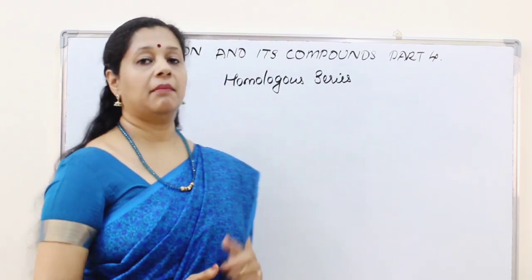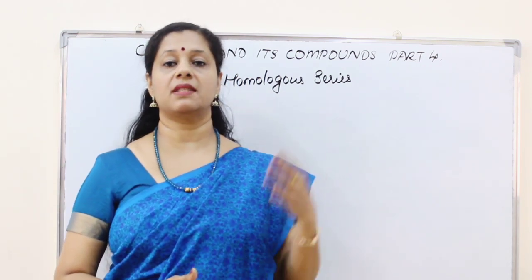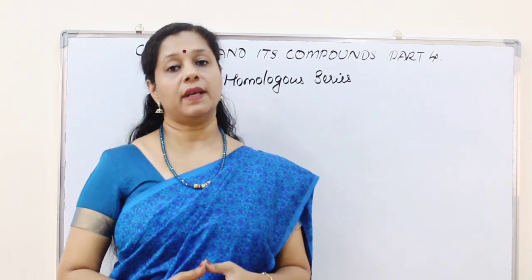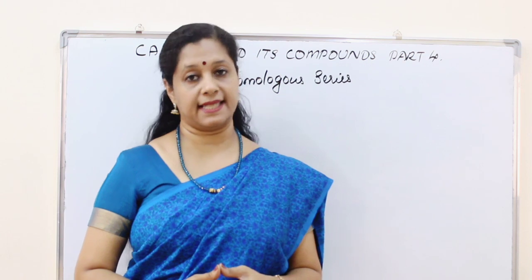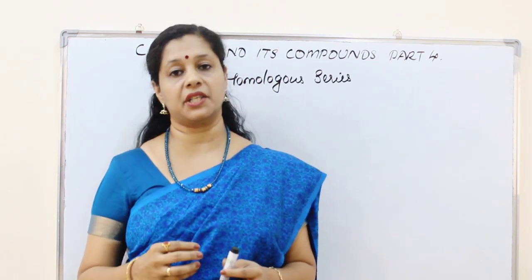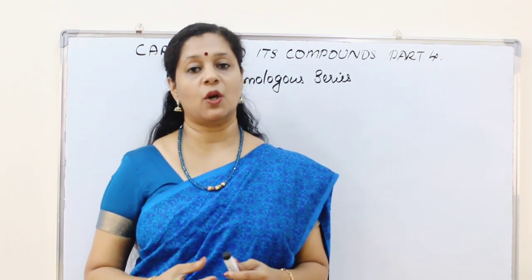So we learned about the functional groups and the saturated and unsaturated compounds, that is the series of alkanes, alkenes, and alkynes. Now we are going to learn about homologous series. A series of compounds in which the same functional group substitutes a hydrogen in the hydrocarbon is called a homologous series.